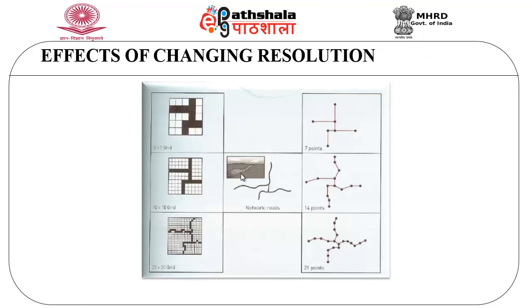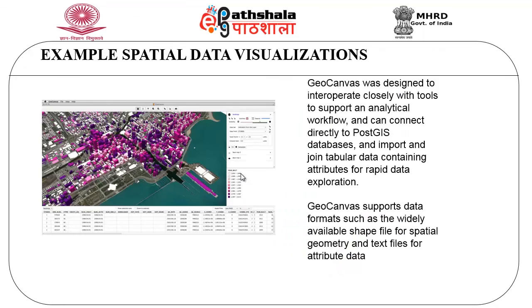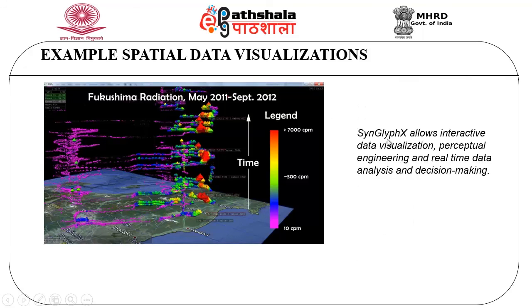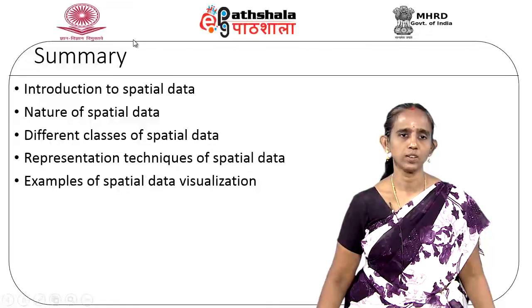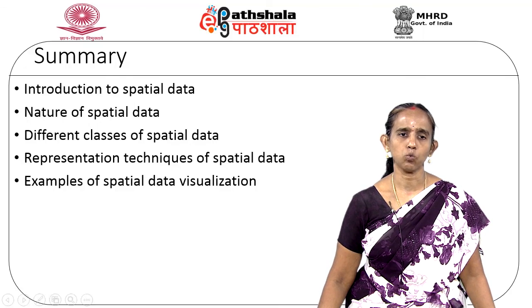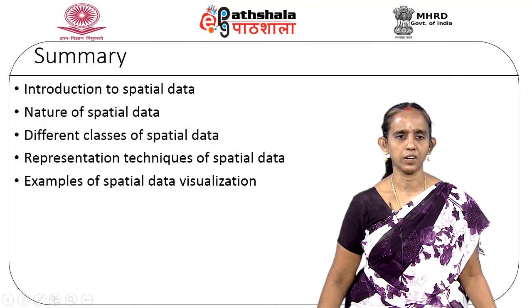There are various effects of changing resolutions and numerical representations of spatial surfaces. These are various examples of spatial data visualization: geocanvas, and Syngilf X which shows interactive data visualization in the form of spatial visualization, and combining hue, saturation, and brightness to visualize different features of a plan. To summarize, we have looked at what a spatial data type is, the different natures and characteristics of spatial data types, the different classes of spatial data, how spatial data are represented using various techniques, and examples of spatial data visualization.